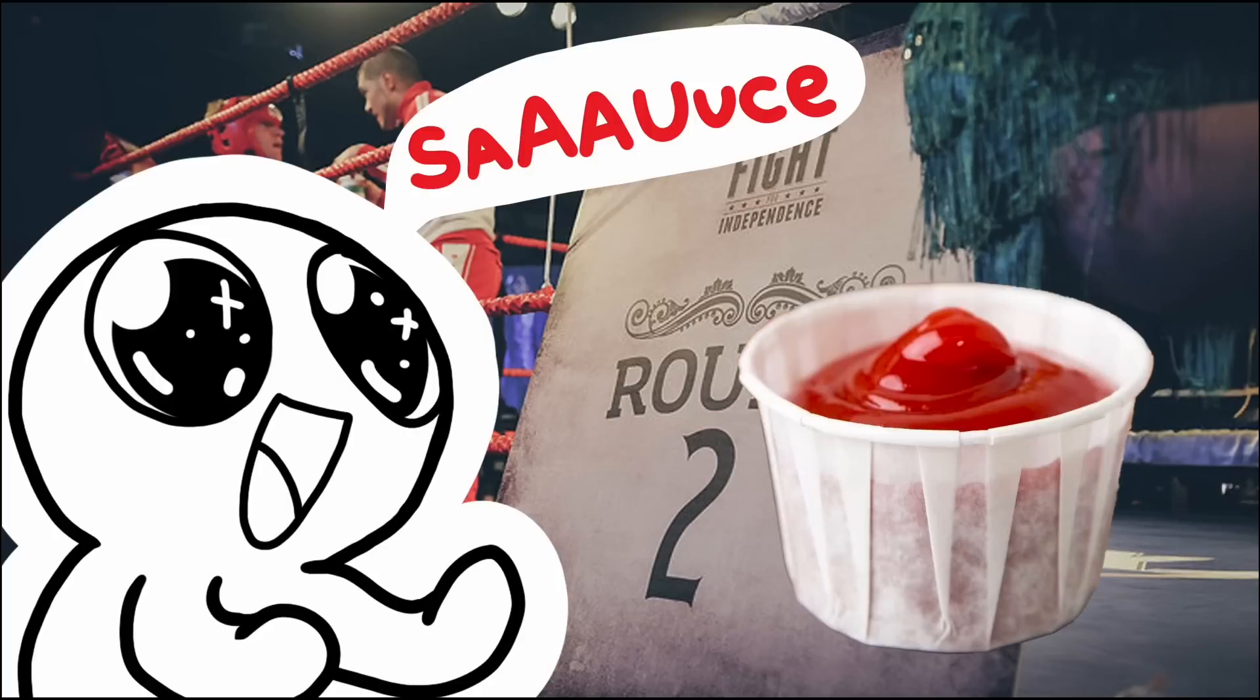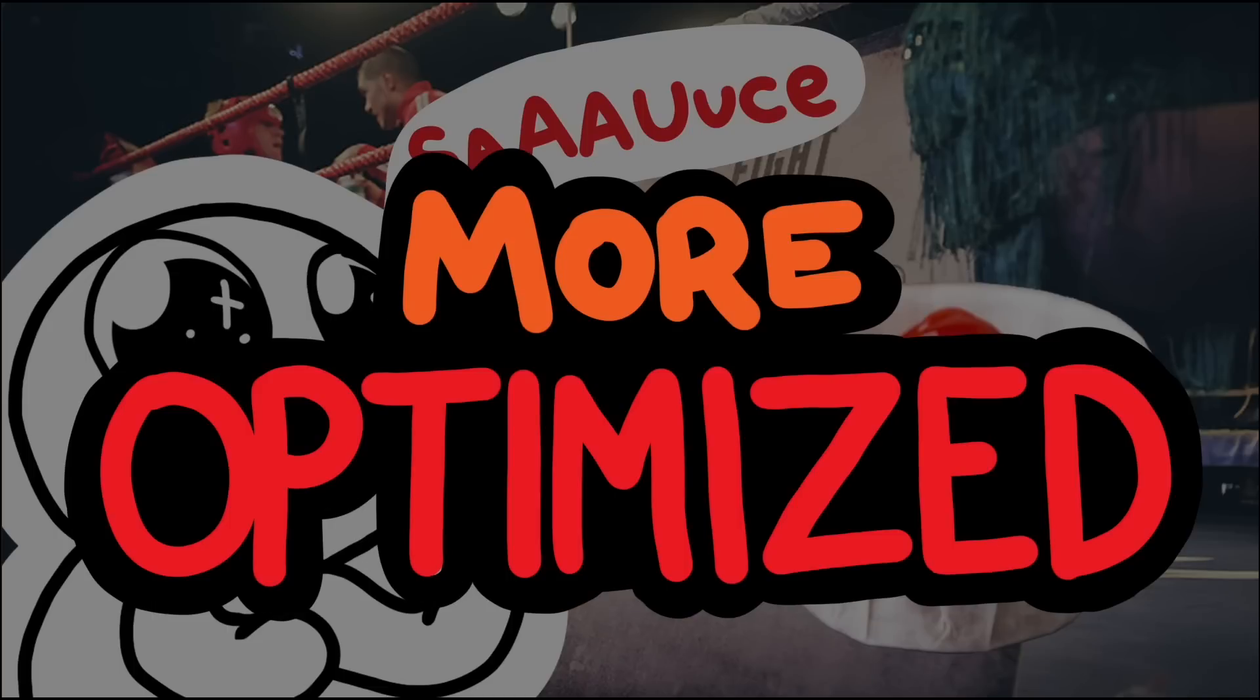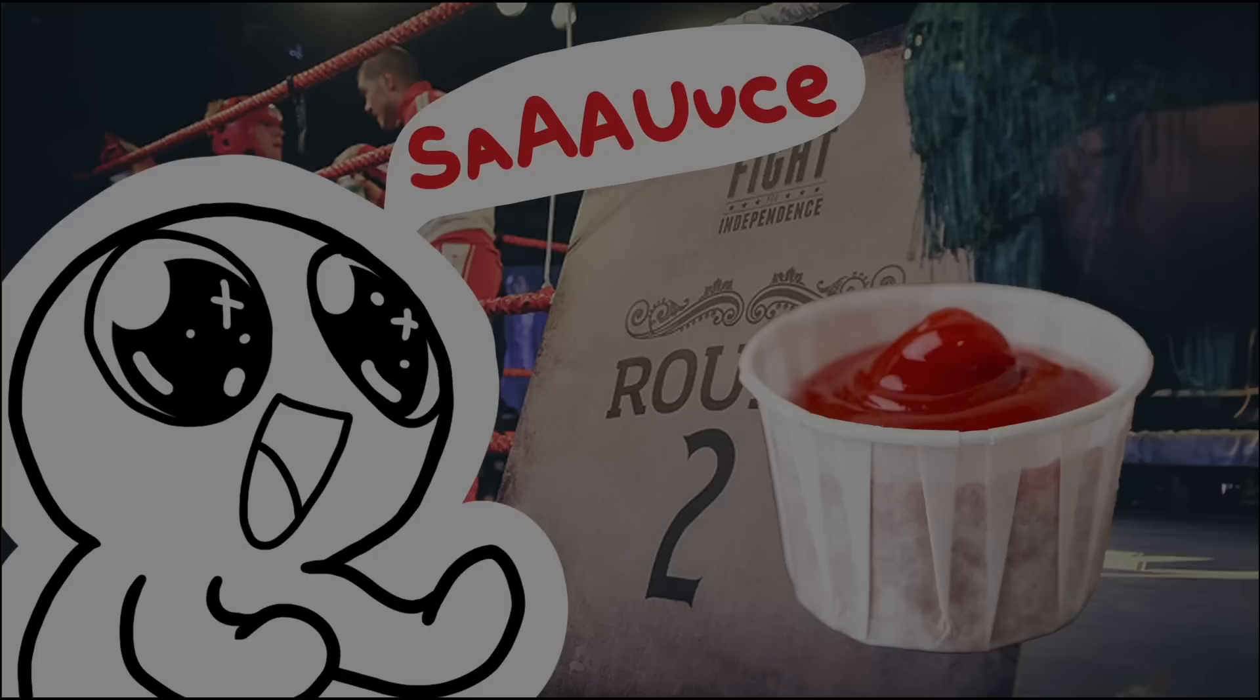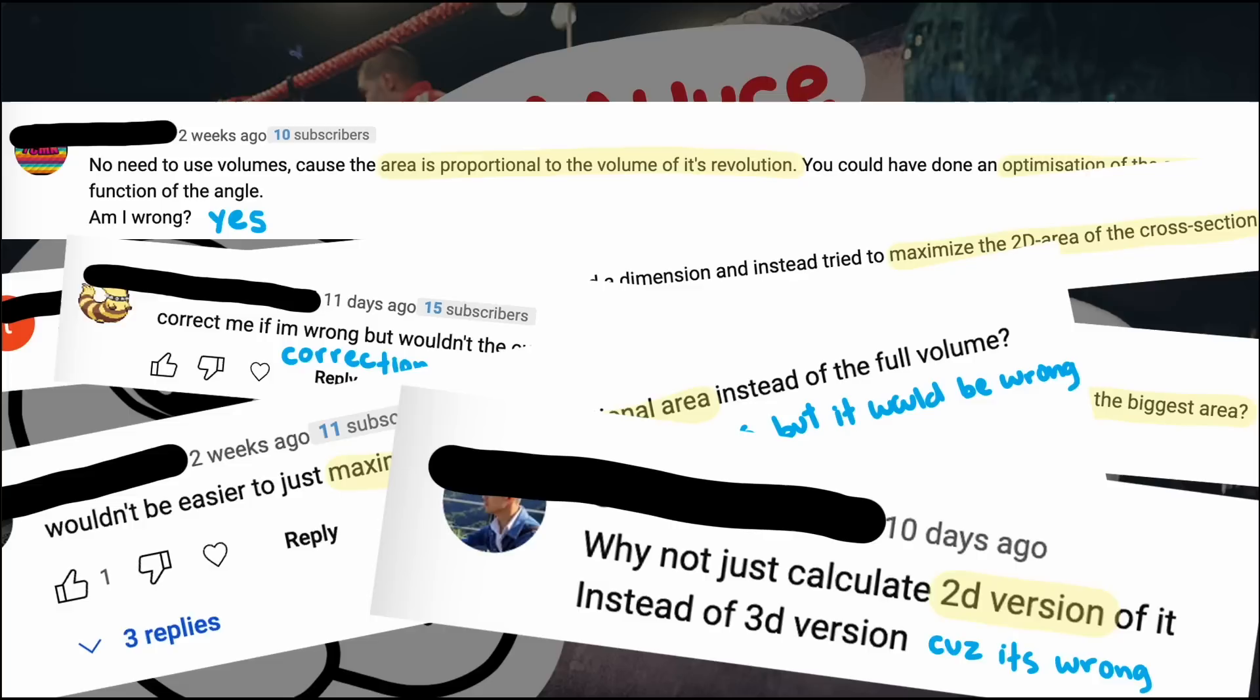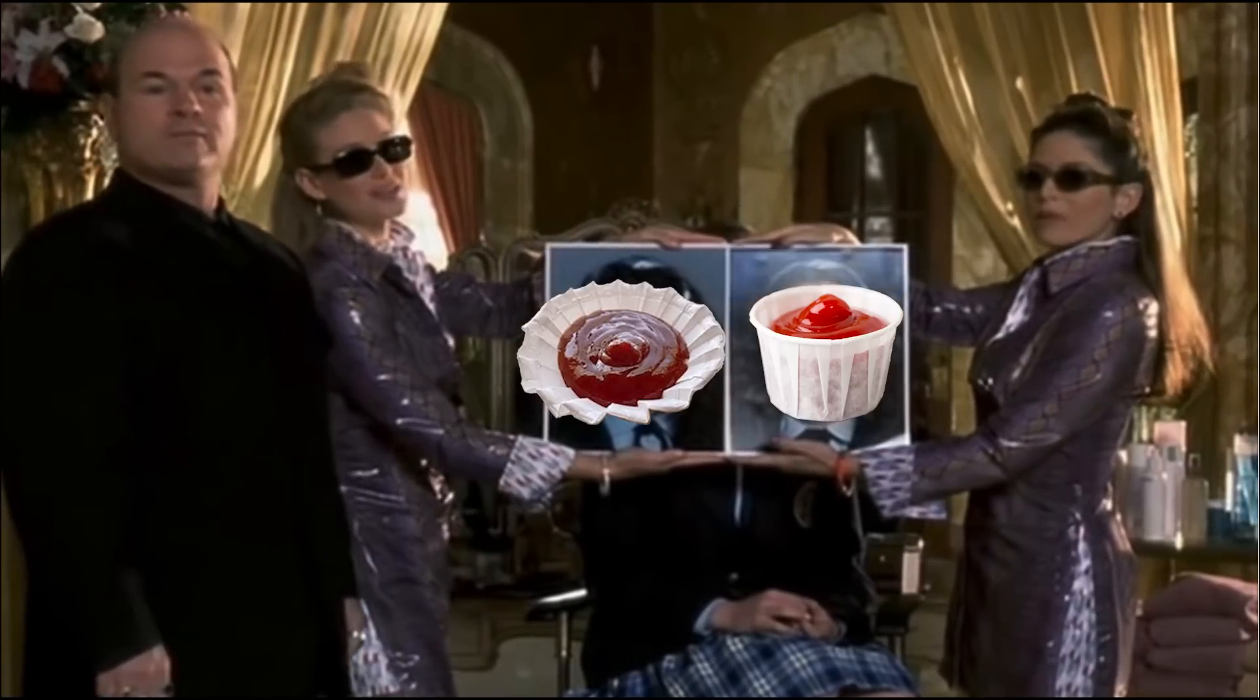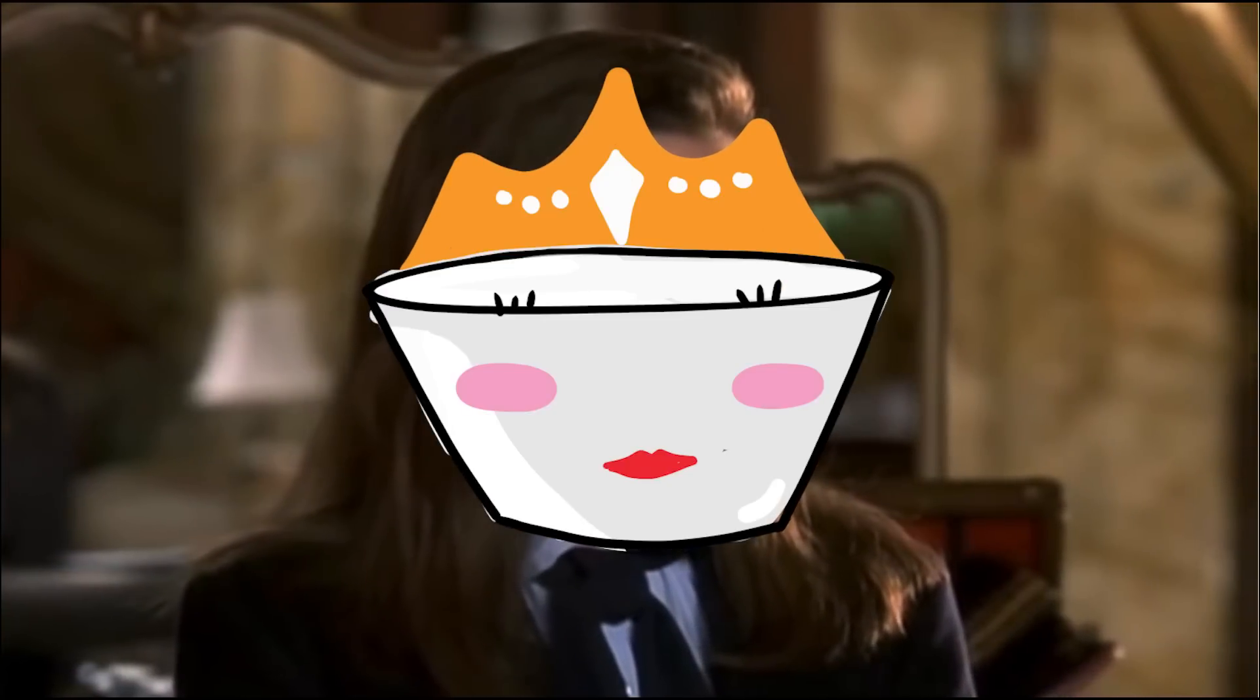We extend the Arby's sauce solution in a few different ways to better understand the problem, and then we find an even more optimized solution than we did last time. We also explore a common misconception, something that many viewers suggested in the comments as a correct solution, but it turns out not to be correct. By the end of this video, we will have greatly improved the design of the paper condiment cup to maximize the amount of sauce if we are restricted to a flat base and a straight side.